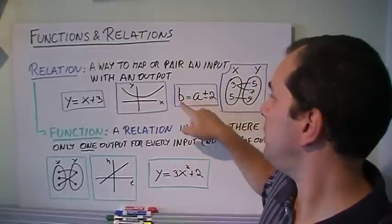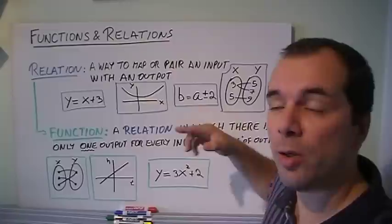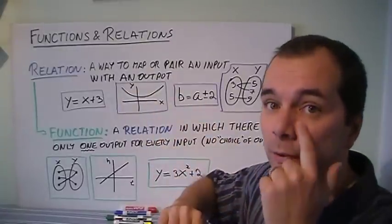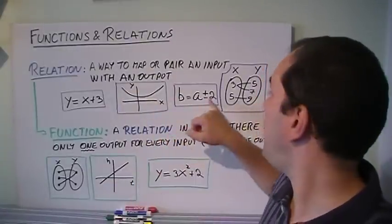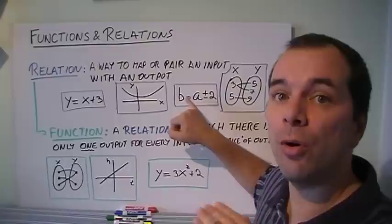Or if you give me something like this, b equals a plus or minus 2. So I have either go up 2 or down 2. So if your input is 10, my output is going to be either 12 or 8.